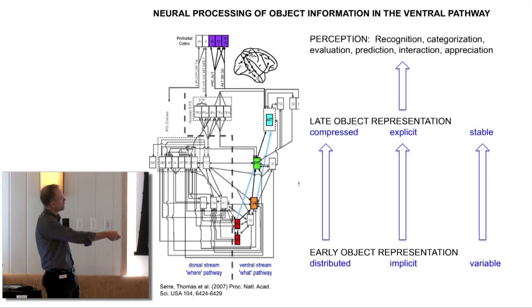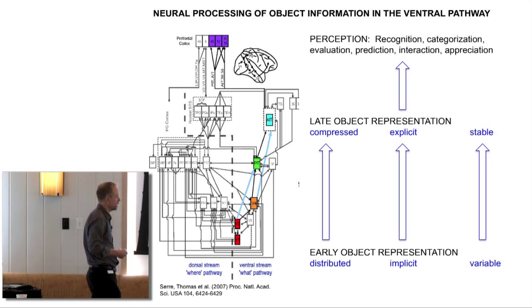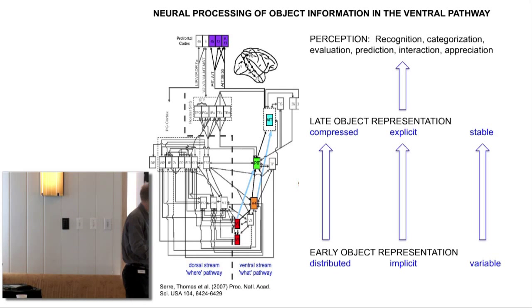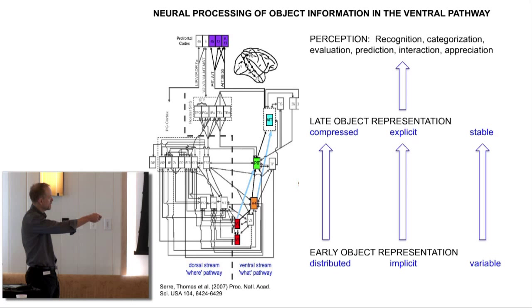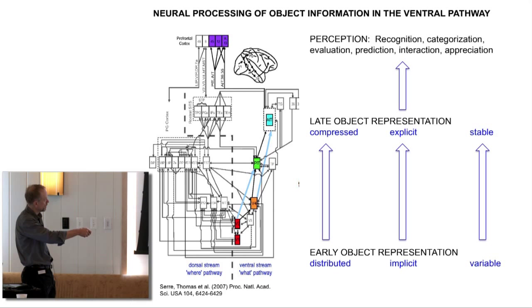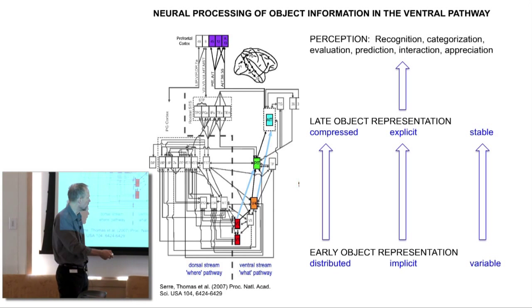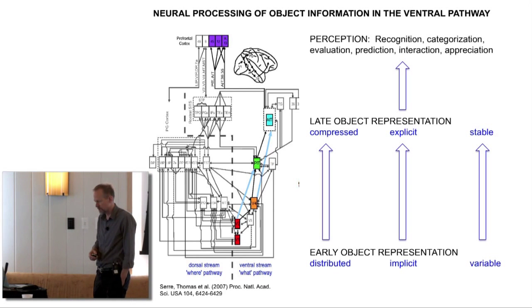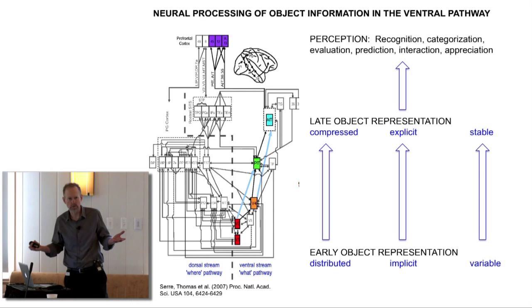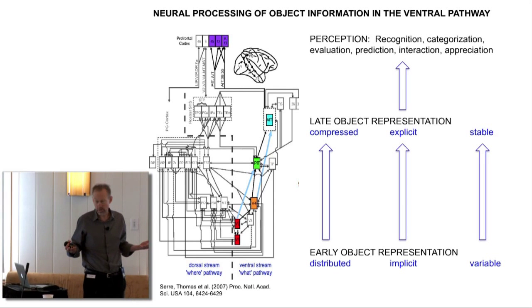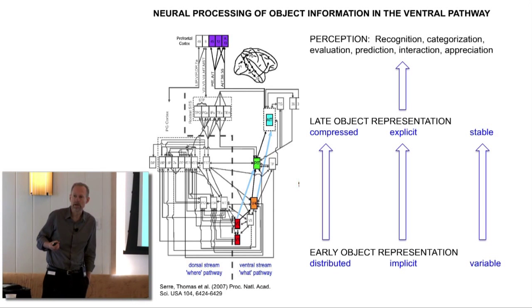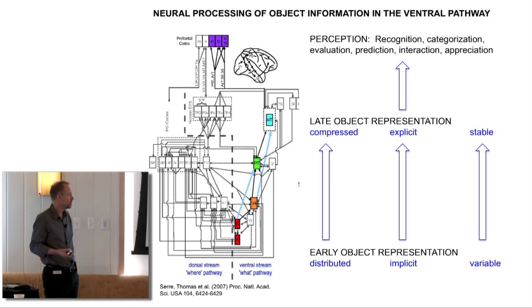This part of the figure represents what I see as the job or one of the main things that gets accomplished by this hierarchy of areas: performing some kind of transformation of information. When we're talking about early object representations, all the visual information we're ever going to have exists in those representations, but it's not in a form that's useful.